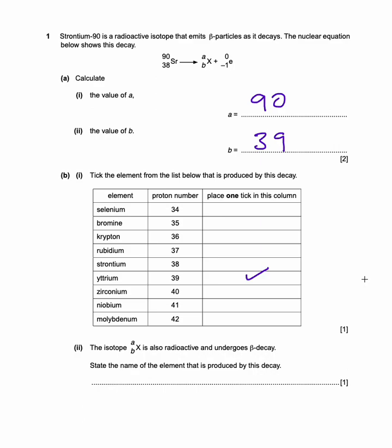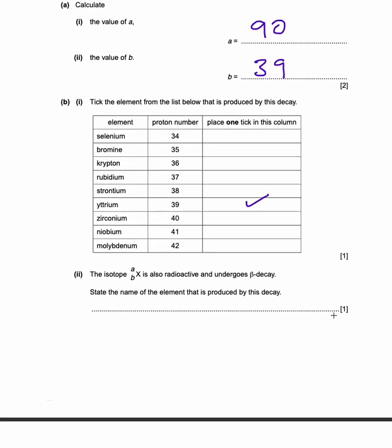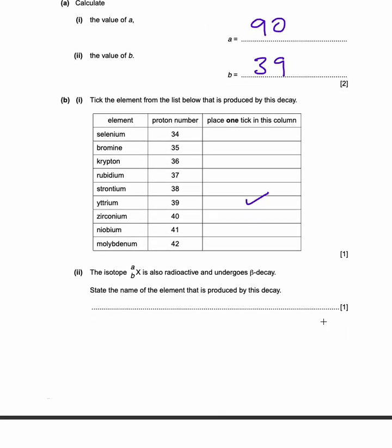So then it says the isotope A, B, X is also radioactive and undergoes beta decay. State the name of the element that is produced by this decay. So in this case, we're not going, well, you don't need to do the calculation, but we're going to do it. So the isotope X has a mass of 90. It has a proton number of 39. So we'll still label it as X. We know what it is. It undergoes beta decay.